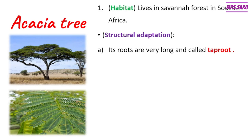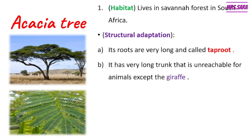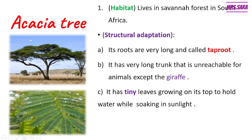The second part is the trunk. The acacia tree has a very long trunk to make it unreachable for animals — except the giraffe, as the giraffe has a long neck. So the trunk is very long and unreachable for animals except the giraffe.